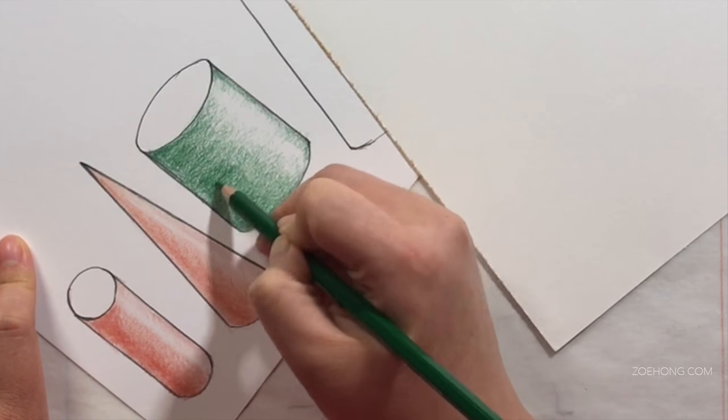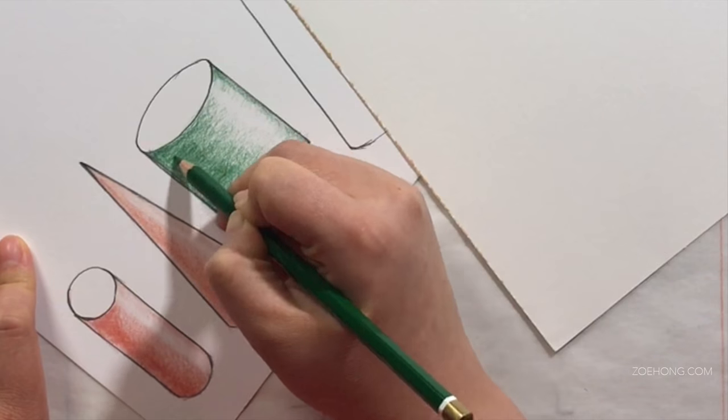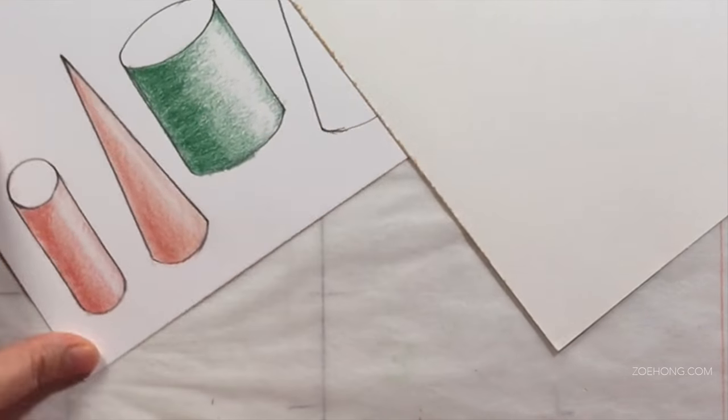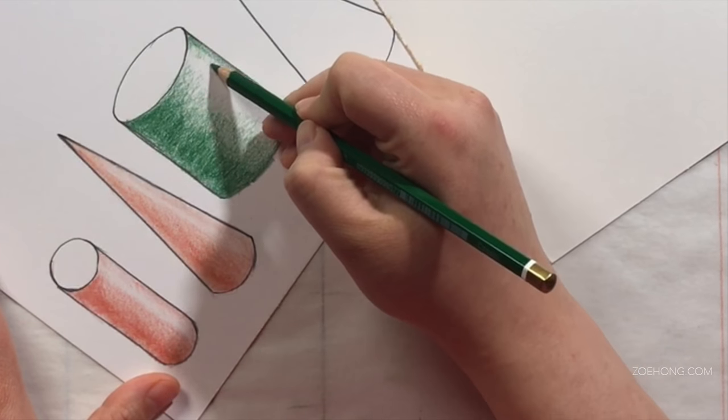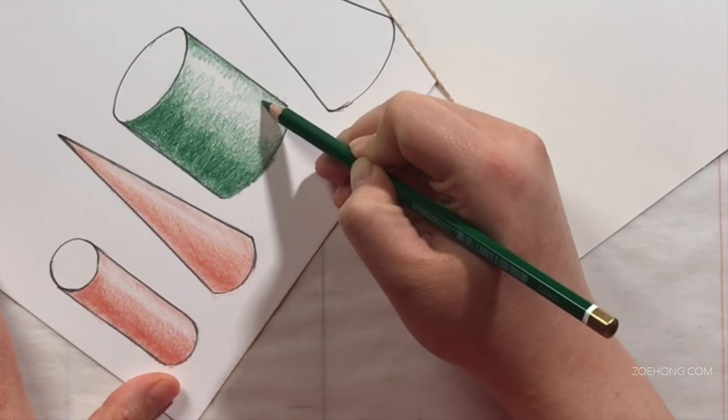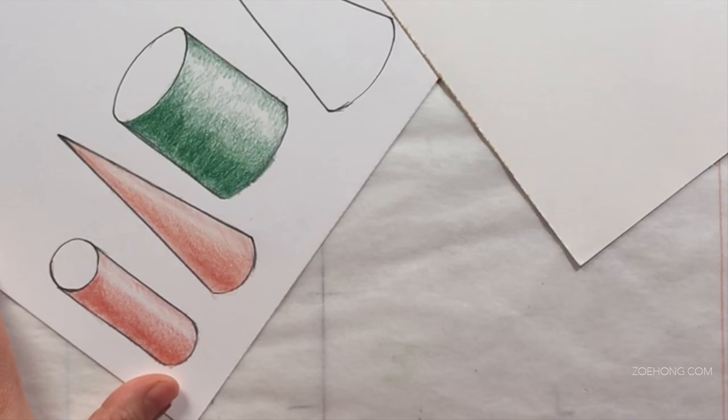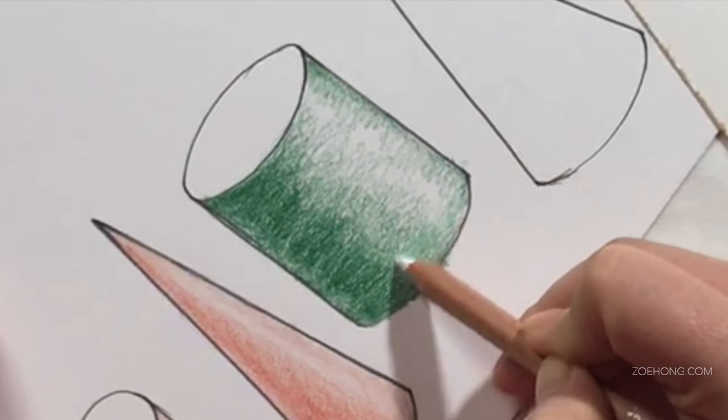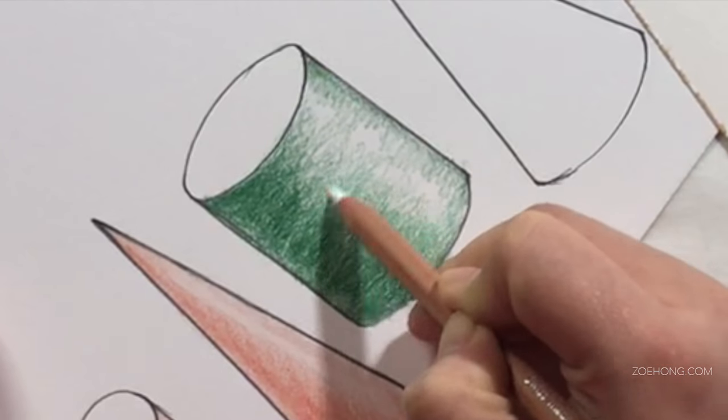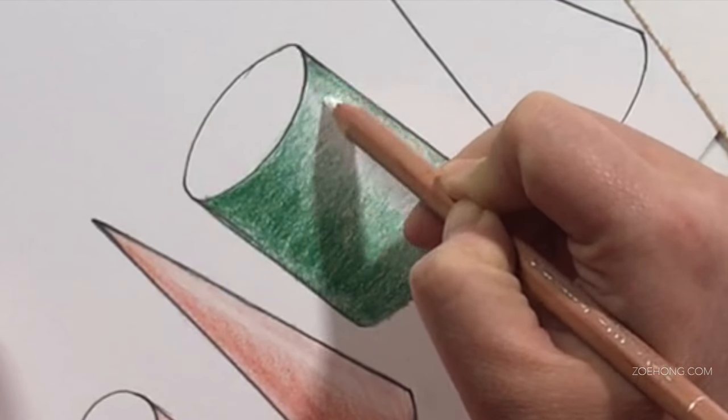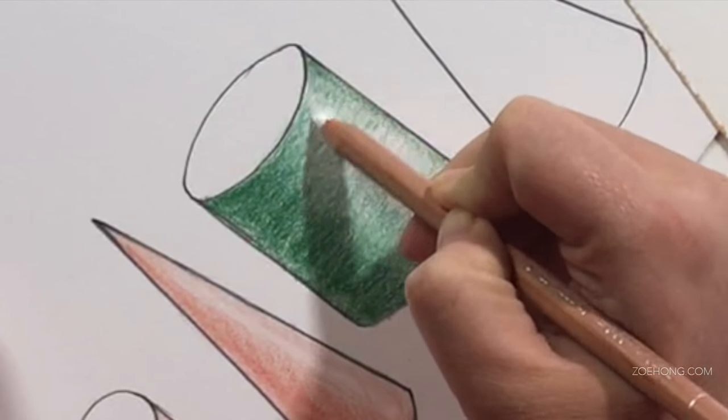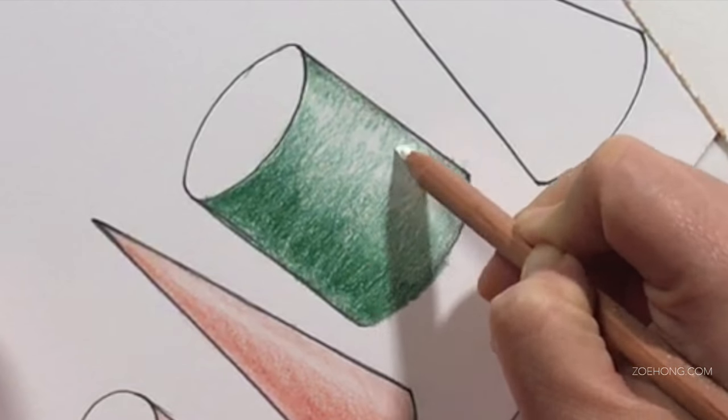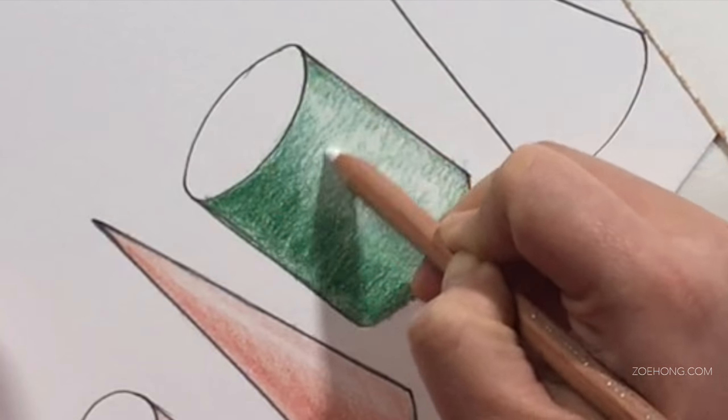Now I'm going to go in here with the same exact colored pencil and build up the color to create darker values for the shadows. Colored pencil is a slow medium, and it's great for beginners because it's slow and you build up slowly. You're not scared that the marker is going to dry super fast before you can blend things out or paint getting messy and running all over the place. You have a lot of control with colored pencil.